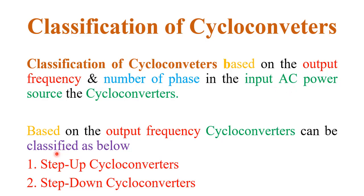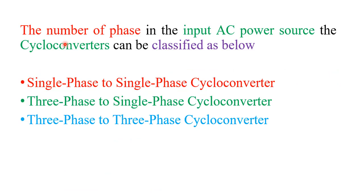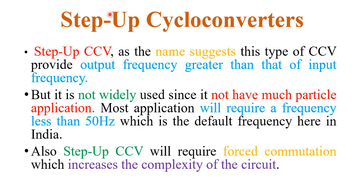Based on output frequency, cycloconverters are classified as: first, step-up cycloconverter, and second, step-down cycloconverter. According to the number of phases in the AC input power source, cycloconverters are classified as: single-phase to single-phase, three-phase to single-phase, and three-phase to three-phase cycloconverter.